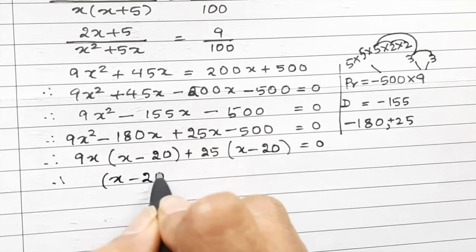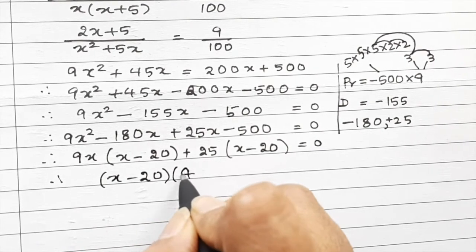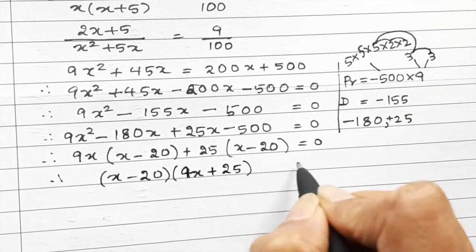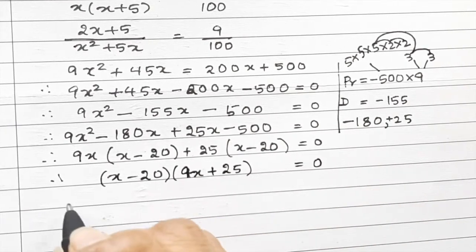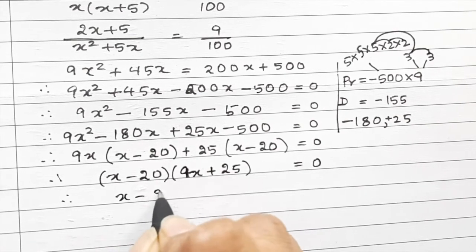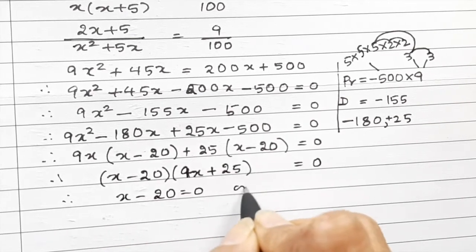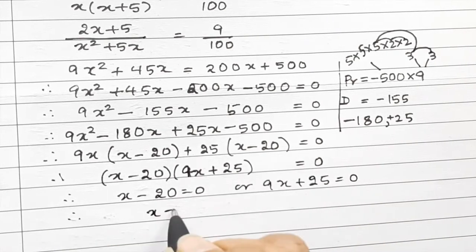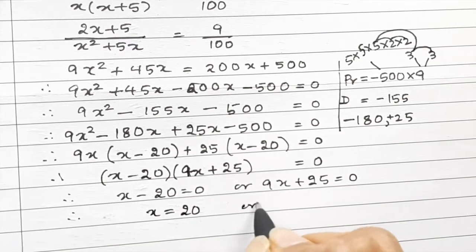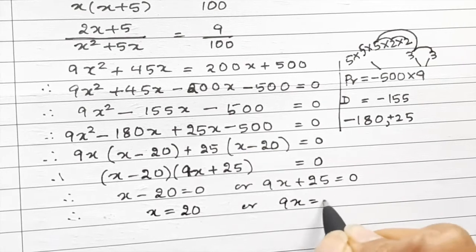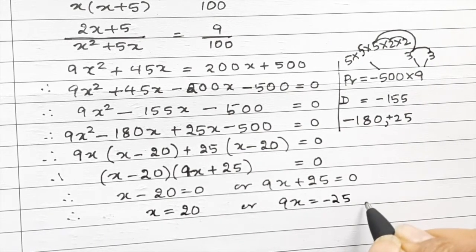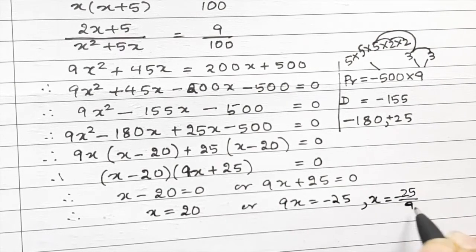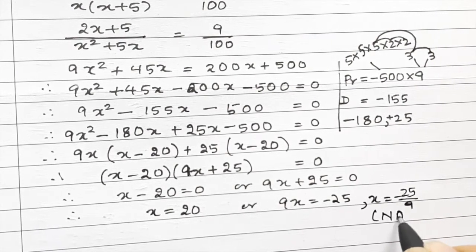Factoring: 9x(x minus 20) plus 25(x minus 20) equals 0, giving (x minus 20)(9x plus 25) equals 0. So x equals 20 or x equals minus 25 upon 9. Since time cannot be negative, we reject x equals minus 25 upon 9.